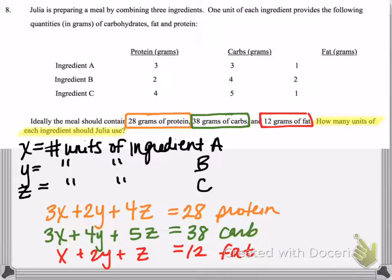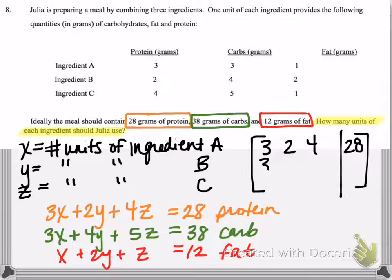So we'll create our matrix now looking at my three equations here. My augmented matrix: first row will be 3, 2, 4, and 28. Second row, 3, 4, 5, and 38. And then last row would be 1, 2, 1, and 12.